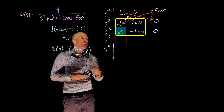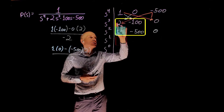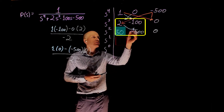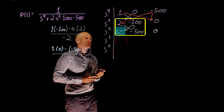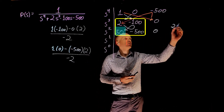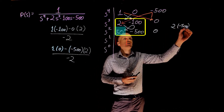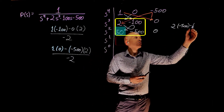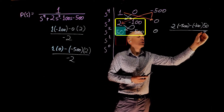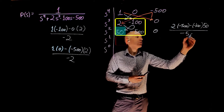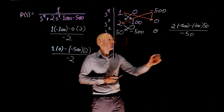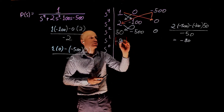We can now move to s to the power of 1. Taking the two rows above, the s¹ element is computed as 50 times negative 500, minus negative 100 times 50 — wait, more precisely: 2 times negative 500, minus negative 100 times 50, all divided by negative 50. This gives negative 80.